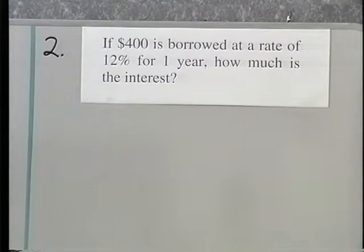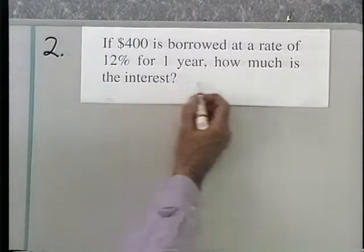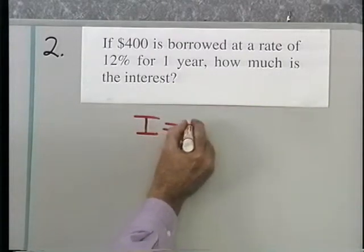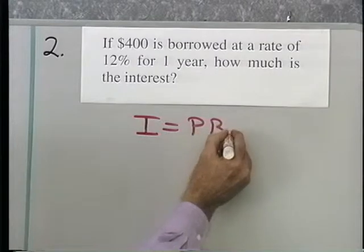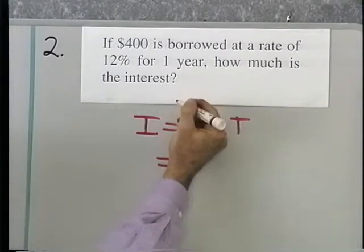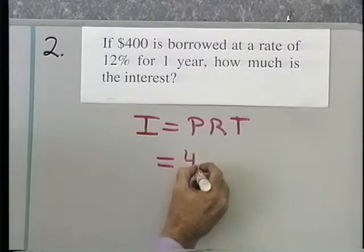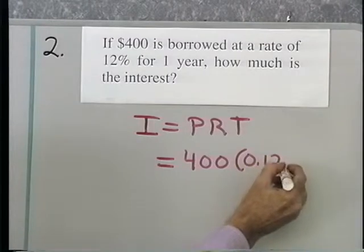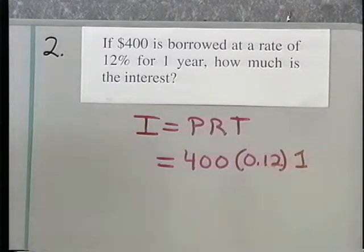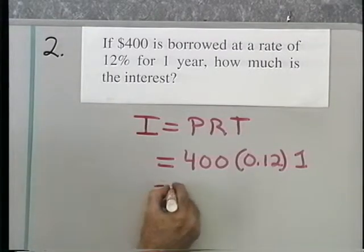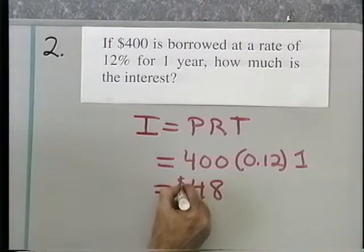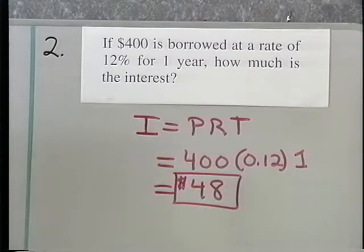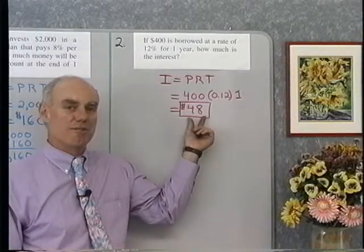Problem 2: If $400 is borrowed at a rate of 12% per one year, how much is the interest? This is a simple interest problem: interest is equal to principal times rate times time. Even though we're borrowing money, it's the same formula. The principal is $400, the rate is 12% so 0.12, and the time is one year. Multiplying 400 times 0.12 times 1, I end up with $48. The interest is $48.